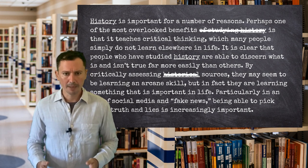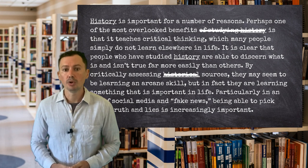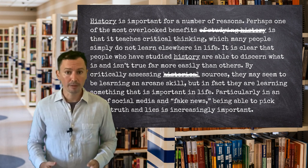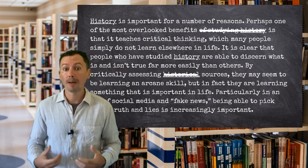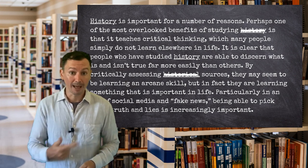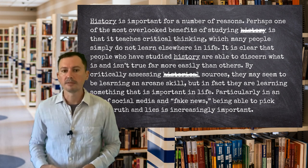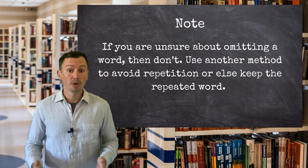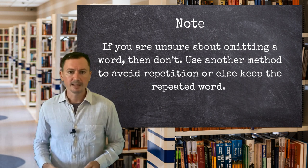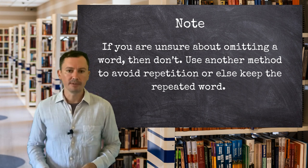Omission is a tricky skill to master because, like using synonyms, it often requires a very deep and intuitive knowledge of the language to do it with a high degree of accuracy. The important thing to note is that removing the word should leave no ambiguity and should not mislead the reader. If we chose instead to omit 'history' from after 'studying', it would seem as though the benefits come from studying anything rather than this one specific subject. If you're uncertain of whether a word could be omitted, it's better to find another way of replacing it, or else go with the repetition and at least be accurate.